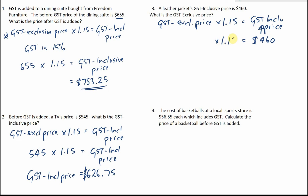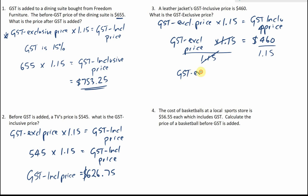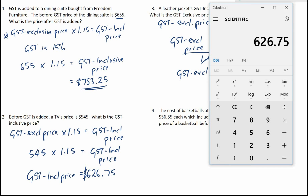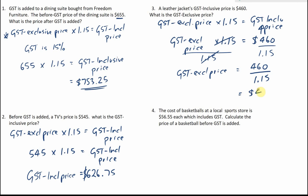We know that we need to multiply the exclusive price by 1.15, and that's what we're trying to find. So we've got the exclusive price times 1.15. What we need to do at this point is divide both sides by 1.15 — just a little bit of algebra. These two cancel one another and we're left with the GST exclusive price on this side, which equals $460.00 divided by 1.15. That gives us $400.00. So $400.00 is the GST exclusive price.